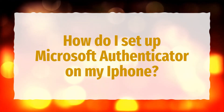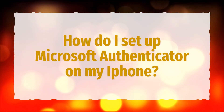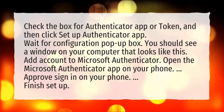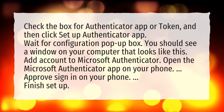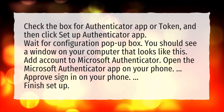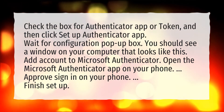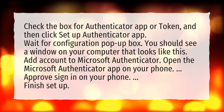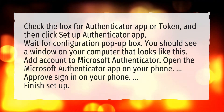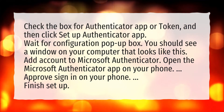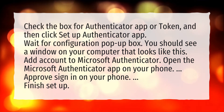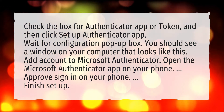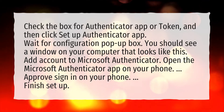How do I set up Microsoft Authenticator on my iPhone? Check the box for Authenticator app or token, and then click Setup Authenticator app. Wait for the Configuration pop-up box. You should see a window on your computer that looks like this. Add account to Microsoft Authenticator. Open the Microsoft Authenticator app on your phone. Approve sign in on your phone. Finish setup.